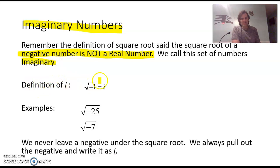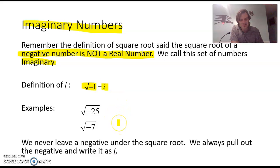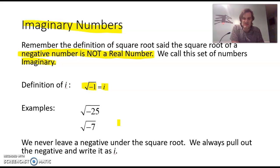The definition of the imaginary number is that the square root of negative one, we will just call i for imaginary. So this is a definition — it's not something you can really question. When we say something is true by definition, there's not really a discussion about whether or not it's true. It's something that we've created to kind of move forward.